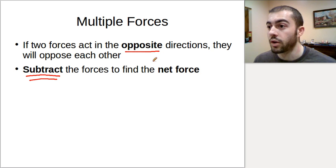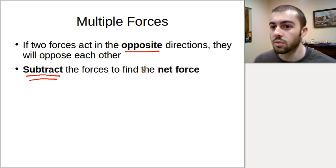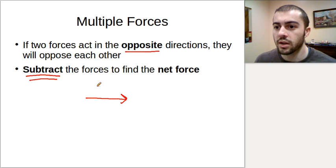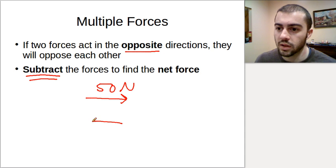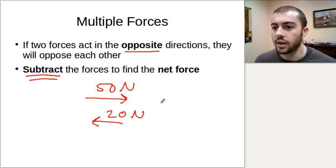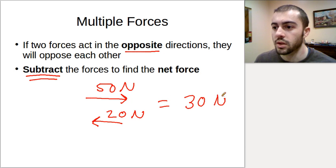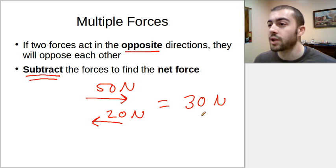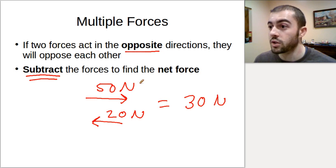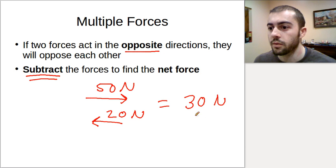So if forces are going in the same direction, we add them. If they're going in opposite directions, we subtract them. So to find the net force, if we have a force going to the right that's 50 newtons and a force going to the left that's 20 newtons, we have to subtract the forces. The net force here is going to be 30 newtons. To decide which direction, the easiest way is to just see which force is bigger - the bigger force always wins out. So the 50-newton force is bigger than the 20-newton force, so the net force is going to be to the right.